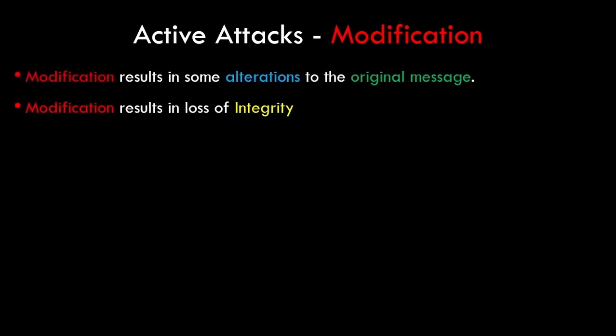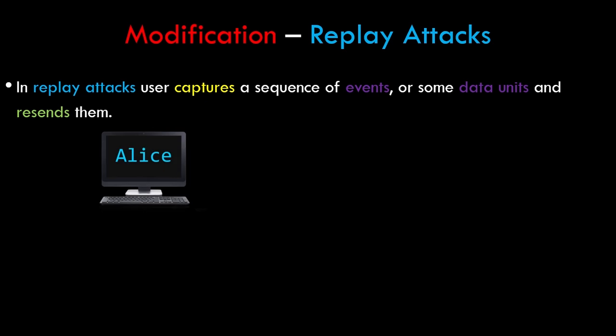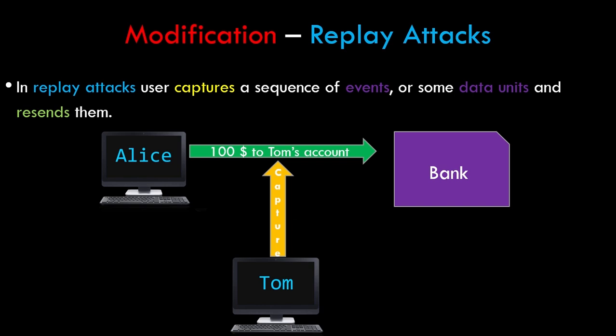The next type of active attack is a modification attack. Modification, as the name suggests, results in some alteration to the original message. There are two types: replay attacks and alteration. Modification attacks usually result in loss of integrity — a principle of network security we'll cover in further tutorials. In a replay attack, the user captures a sequence of events or data and resends them. For example, Alice wants to transfer $100 to Tom, so she initiates the transaction with the bank. Tom captures this transaction and re-initiates another transaction in her name, resulting in him earning $200. The bank doesn't know the second transaction was initiated by Tom and not Alice.